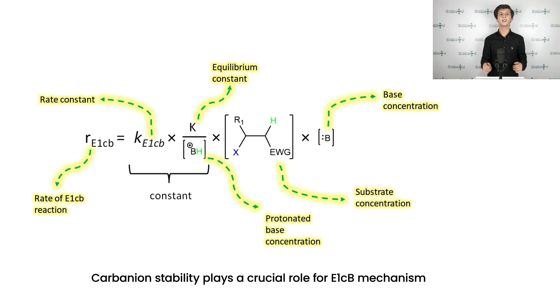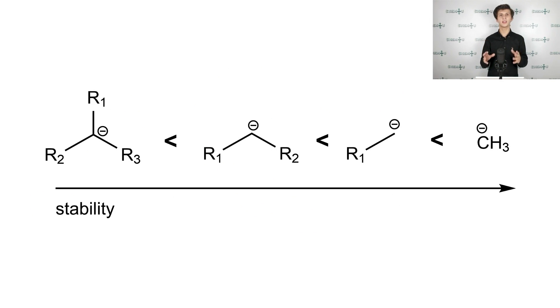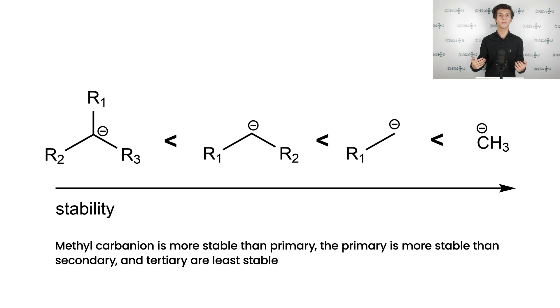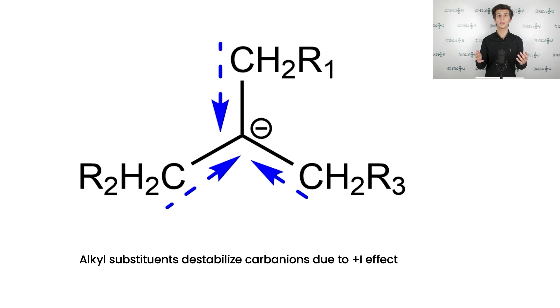It means that carbanion stability plays a crucial role in E1CB mechanism. You have definitely noticed the similarity to E1 mechanism where we have discussed the stability of carbocation. Let us take a look at factors that influence the stability of carbanions. The first factor is obvious, the number of adjacent carbon atoms. In this case, the more highly substituted carbanions are less stable compared to those less substituted. In other words, methyl carbanion is more stable than primary, the primary is more stable than secondary, and tertiary are least stable. It is clear that the order presented on the slide is opposite compared to that of carbocation, and it is simply because of the positive inductive effect of alkyl groups, which causes the increase of electron density on central carbon, thus decreasing its stability. The positive inductive effect is depicted with dashed blue arrows.